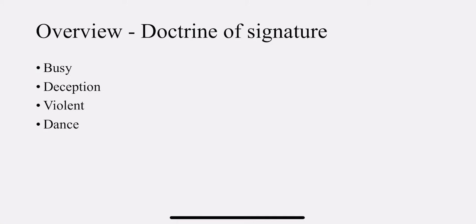With the doctrine of signature, we have learned four points in detail. The spider group: the spider is busy — so is the spider patient. Deception — they are violent. Dance. The spider is busy, they are violent, they are deceitful, and there is dance.